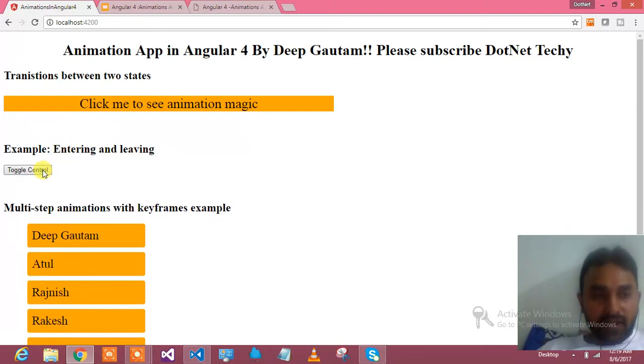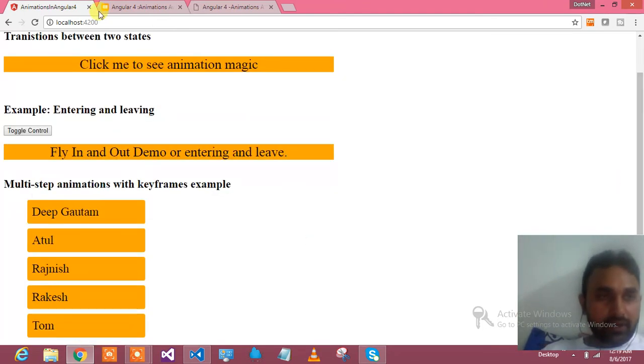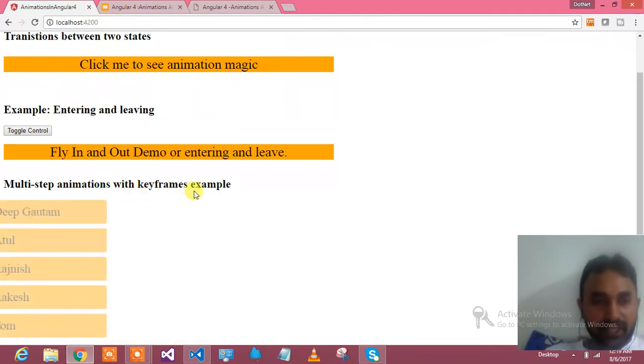Second thing, entering and leaving into the states. Toggle the controls. So this fly in and fly out I am able to toggle. This thing you will learn. Third thing you will learn over here, let me refresh this page. Notice the third step: multi-step animation with keyframes.